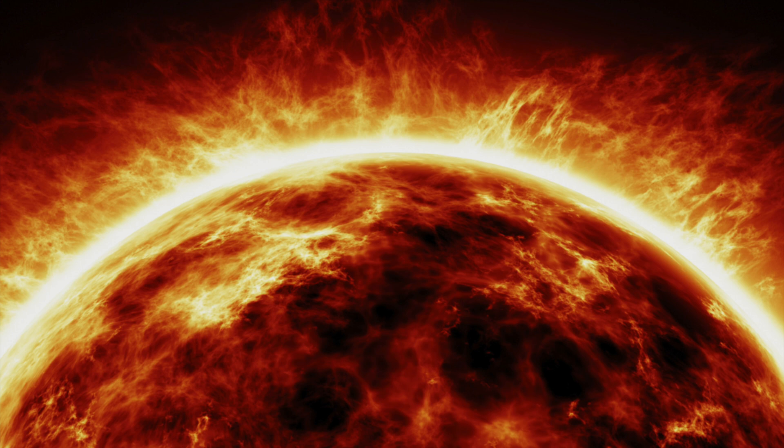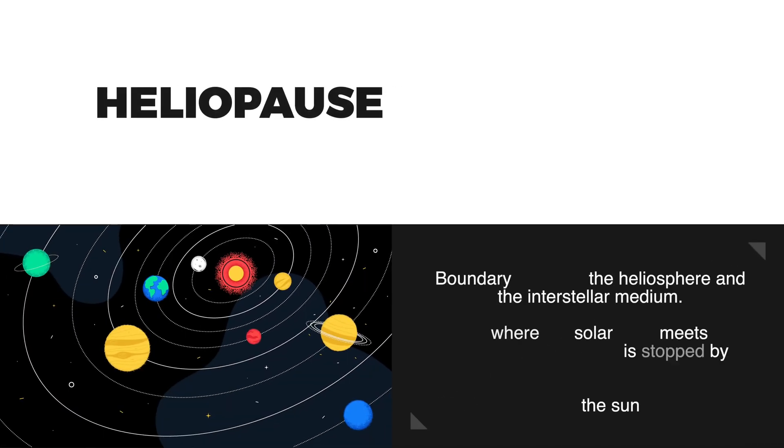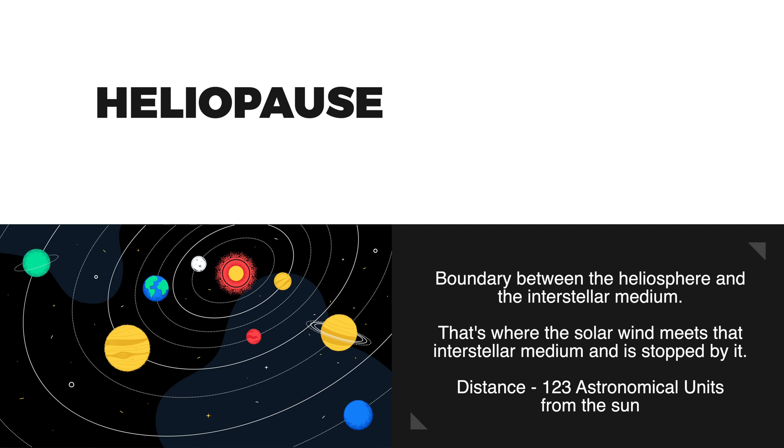One astronomical unit corresponds to the average distance of Earth from the Sun. The heliopause is the boundary between the heliosphere and the interstellar medium. There, the solar wind meets the interstellar medium and is stopped by it.